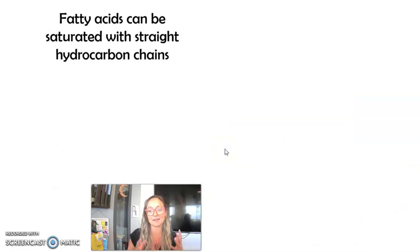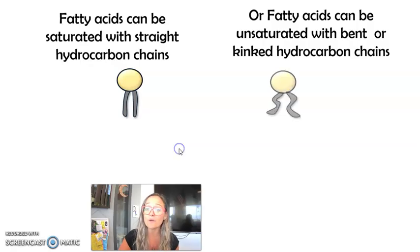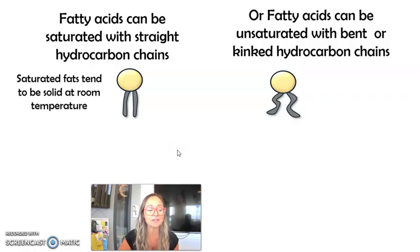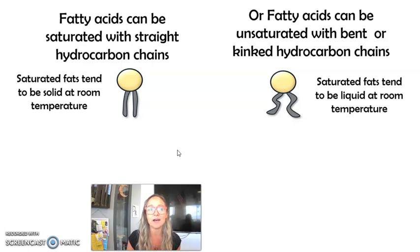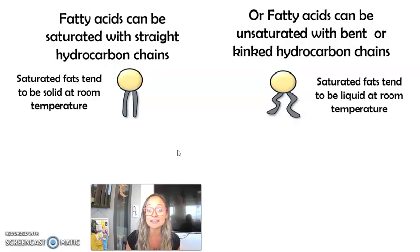Let's talk about the fatty acid component first. Fatty acids — this is a refresher from Unit 2 — can be saturated with straight hydrocarbon chains, or fatty acids can be unsaturated with bent or kinked hydrocarbon chains. Saturated fats are going to be solid at room temperature, while unsaturated fats tend to be liquid at room temperature. For example, bacon grease hardens when it cools, so that's saturated fat, versus olive oil which is liquid at room temperature and has a lot more unsaturated fat.